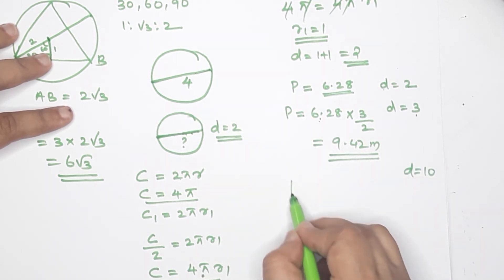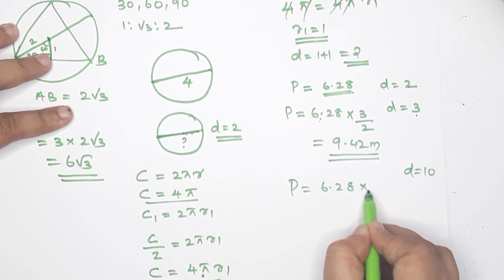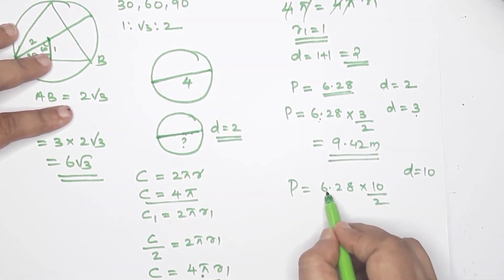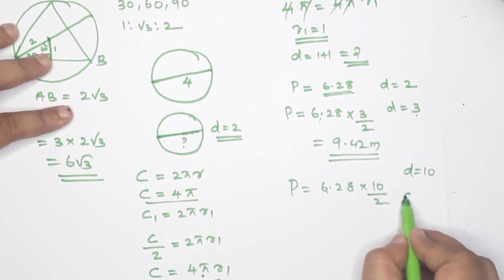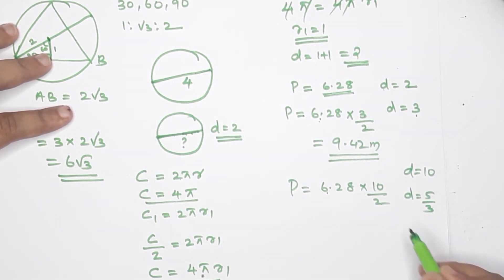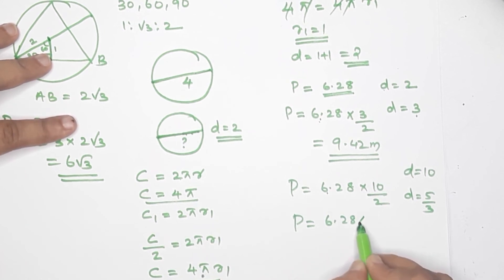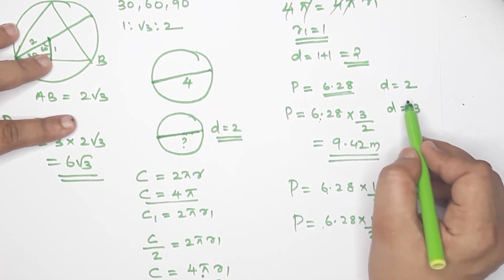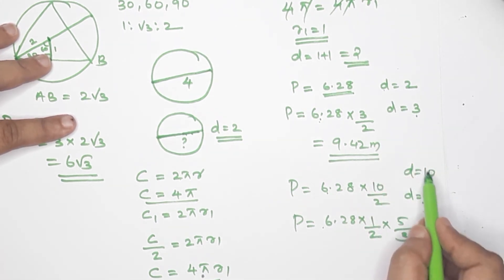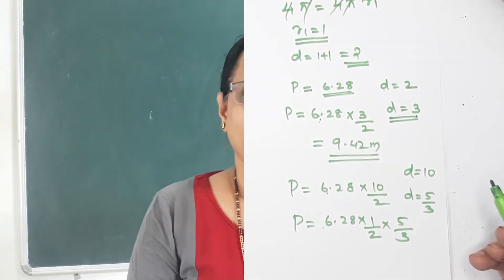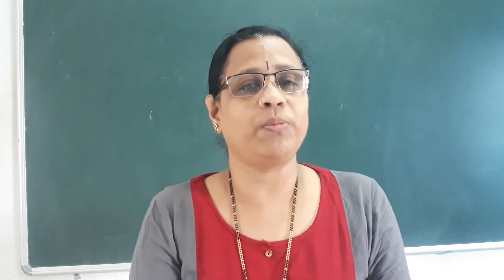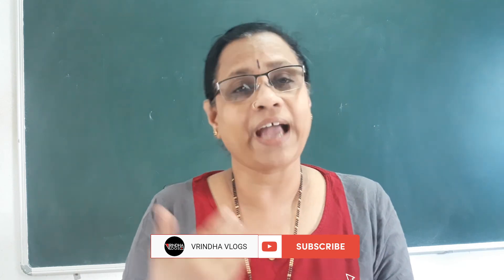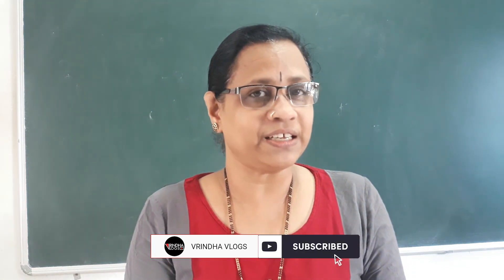For diameter 10: perimeter equals 6.28 times (10/2). We can multiply by the scaling factor to get the answer. You are able to do the problems on page 134. It is very simple. If you can answer directly, do so, but if steps are needed, show the steps — the marks depend on it.